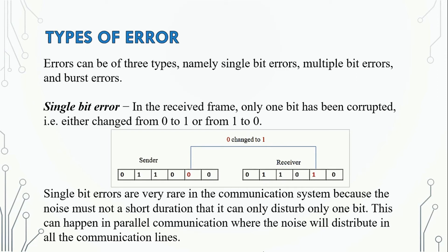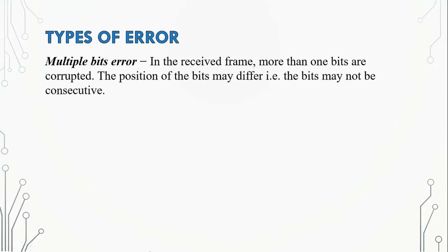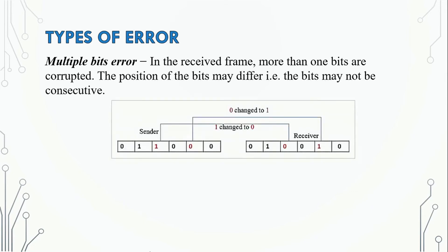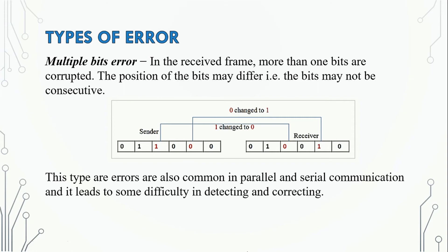Single bit errors are very rare. In multiple bit errors, multiple regular bits are corrupted. This can occur in parallel communication where noise will disrupt all the communication lines. The position of the corrupted bits may differ. This type of error is also common in parallel and serial communication and leads to some difficulty in detecting and correcting.